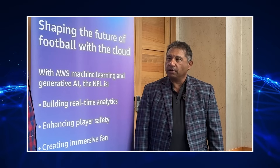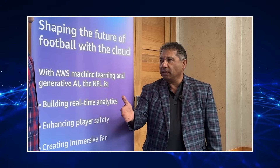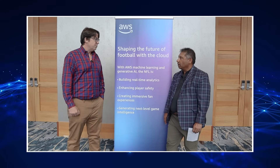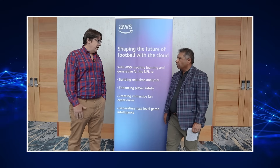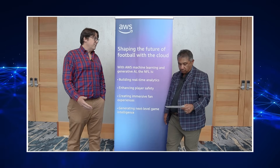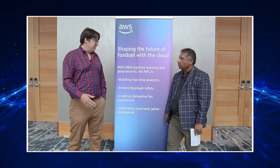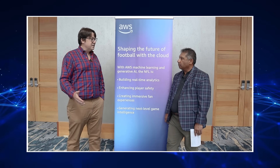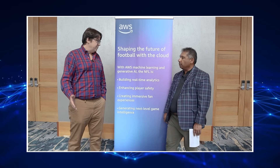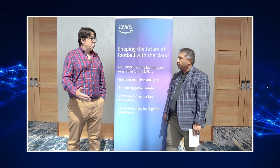There's a range of data sources. The core is Next Gen Stats — the tracking data that gives you XY coordinate data, built from sensors in the shoulder pads. We also use computer vision and video to generate additional data. One key area is head impacts: we have a computer vision model that identifies where all 22 helmets are in the video, integrate that with NGS to understand who's in each helmet, and then automatically detect helmet impacts — whether helmet-to-helmet, helmet-to-body, or helmet-to-ground — to build a robust dataset understanding what is and is not correlated with injury.